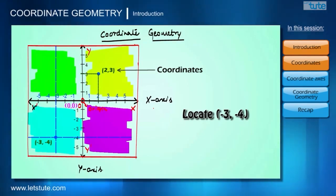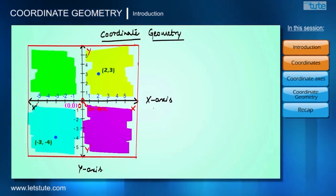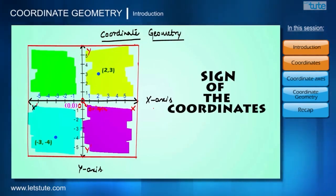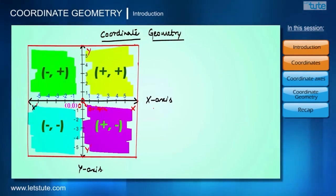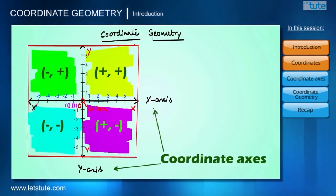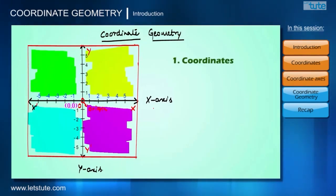Now let's talk about the sign of the coordinates. It depends on the quadrant in which they exist. These two reference axes, X axis and Y axis, are called coordinate axes.